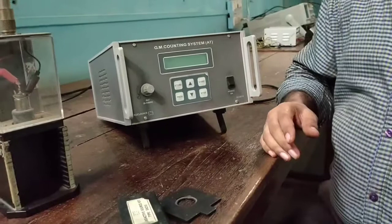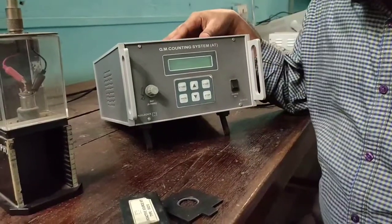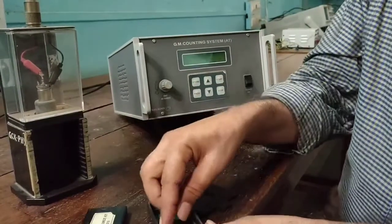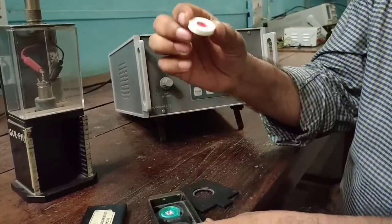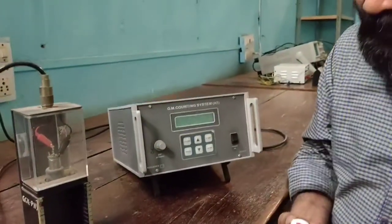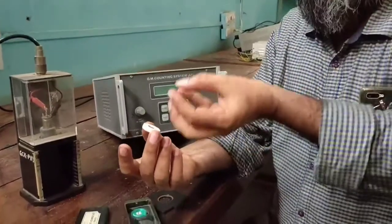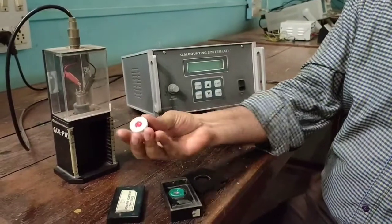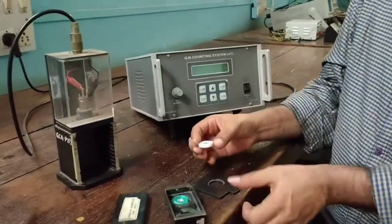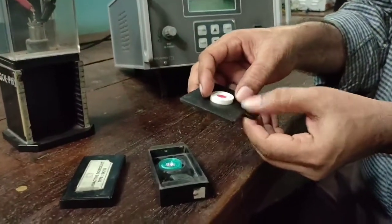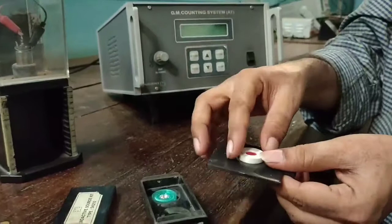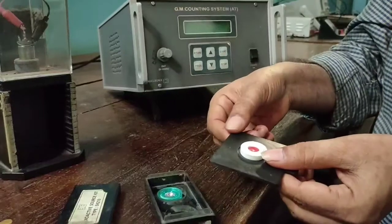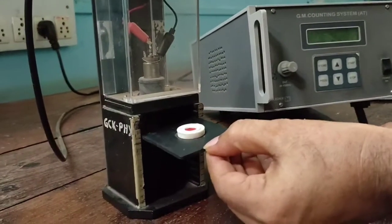For first experiment to determine the characteristic, there is no need to find out the background counts. So simply take the source, radioactive source, and take precaution that do not hold it directly above to see it, so that radiations may spoil the eye. To avoid that, better you hold the source like this away from you. And place the source on the holder with emission direction upward. Here there is no emission, red color where the radioactive radiation will be emitted, then put it in a particular socket.